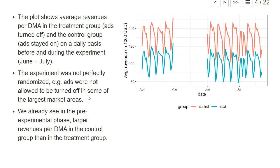This is already suggested by the fact that we see that even before our treatment started, we have much higher average revenues per DMA in the control group. So those were the DMAs for which eBay did not turn off the search engine marketing in the experimental period, compared to the treatment group. Already before the treatment, the control groups had much higher average revenues per DMA.